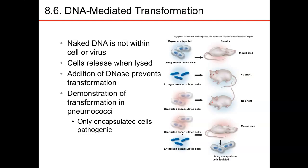Griffith was looking at different forms of Streptococcus. Some of the Streptococcus was smooth or encapsulated, and some was rough or non-encapsulated. He noticed that if he infected rodents with the smooth Streptococcus, they would get sick and die. But if he infected other rodents with the non-encapsulated Streptococcus, those did not seem to cause infection. He thought maybe the capsule was what caused the infection.